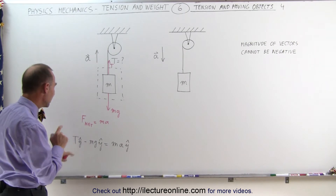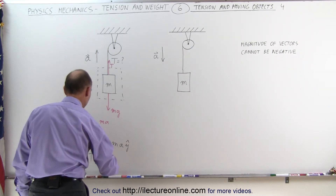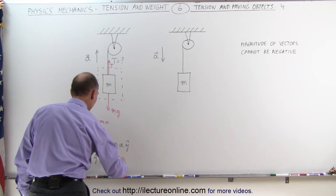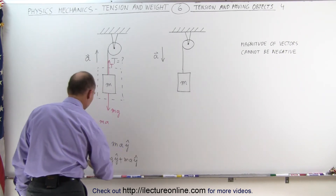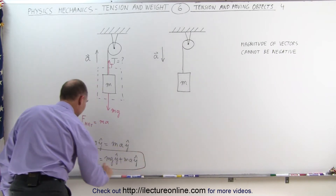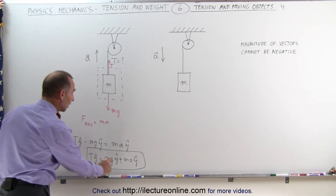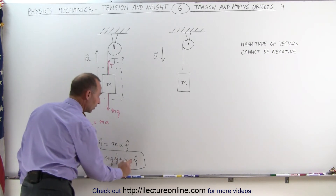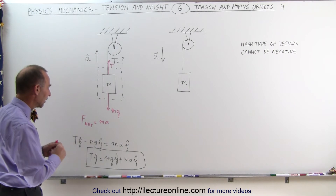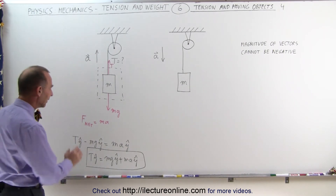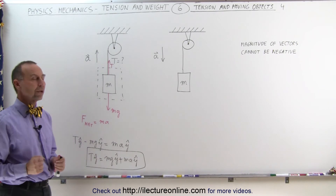Now we want to solve for T. The tension in the y-direction, which is the positive quantity, is equal to mg in the y-direction plus ma in the y-direction. The tension is a positive quantity because it's a positive weight plus the positive ma — the force required for the acceleration of the object. Simply put, the tension equals the weight of the object plus the force required to accelerate it upward.